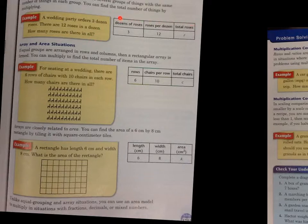If it says a wedding party orders three dozen roses, there are 12 roses in a dozen. How many roses are there in all? So you might set up a chart with 3, 12, and the total that we don't know for roses, and then you multiply 3 times 12 equals the answer.